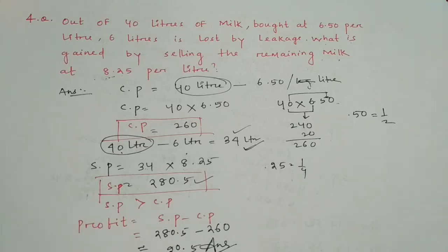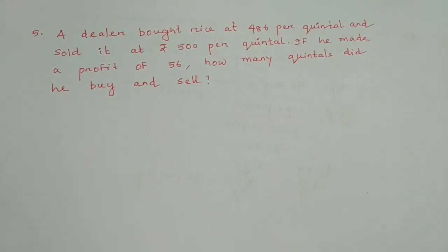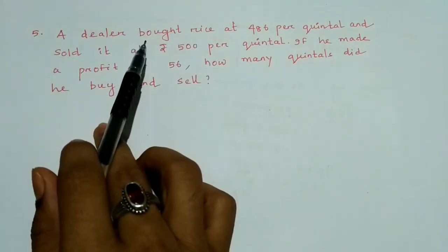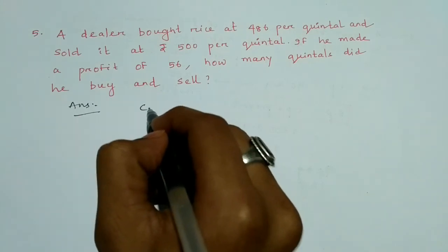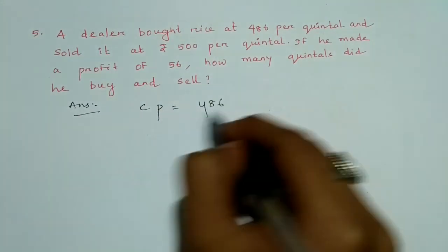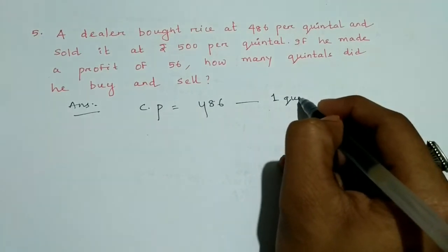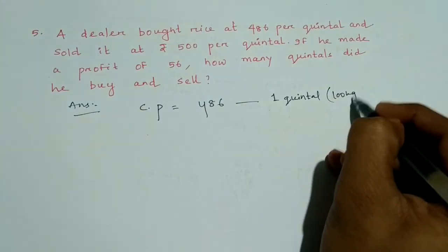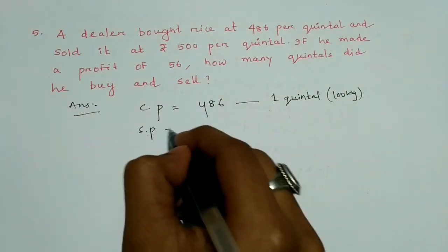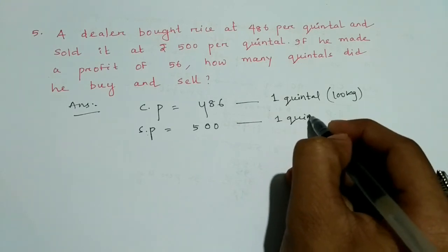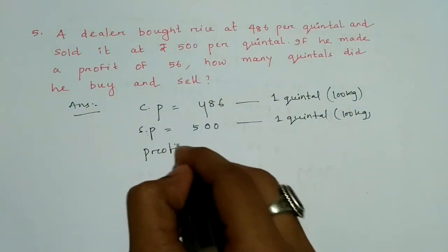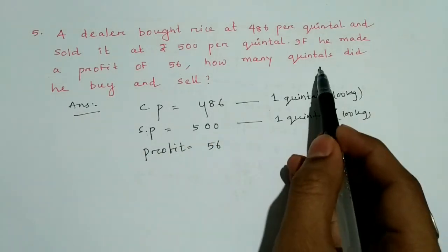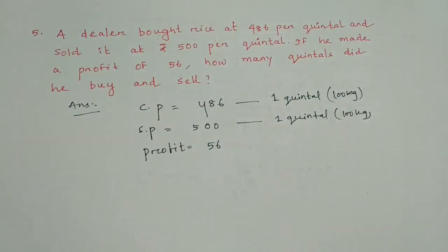Question number five: a dealer bought rice at 486 rupees per quintal. Note that one quintal = 100 kg. He sold it at 500 rupees per quintal. If he made a profit of 56 rupees, how many quintals did he buy and sell? Cost price = 486 per quintal, selling price = 500 per quintal.